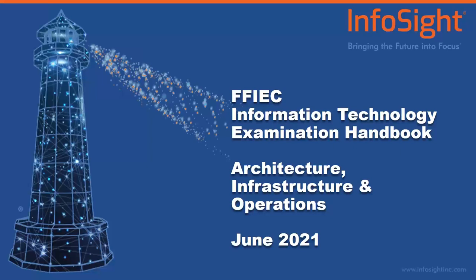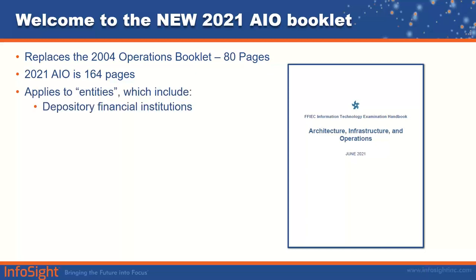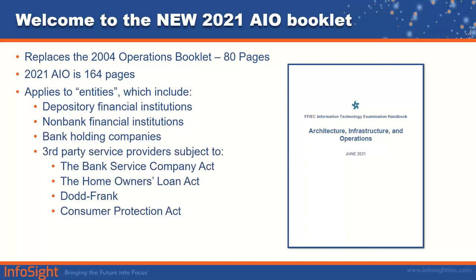Keeping with the Peter Parker principle — with great power comes great responsibility — the FFIEC created a new booklet providing institutions with guidance on what they should implement. This 164-page booklet replaces the 2004 operations booklet, which was only 80 pages. The new booklet has a modern look and feel. It applies to entities including depository financial institutions, non-bank financial institutions, bank holding companies, and third-party service providers subject to the applicable acts — meaning this booklet applies to an awful lot of companies.